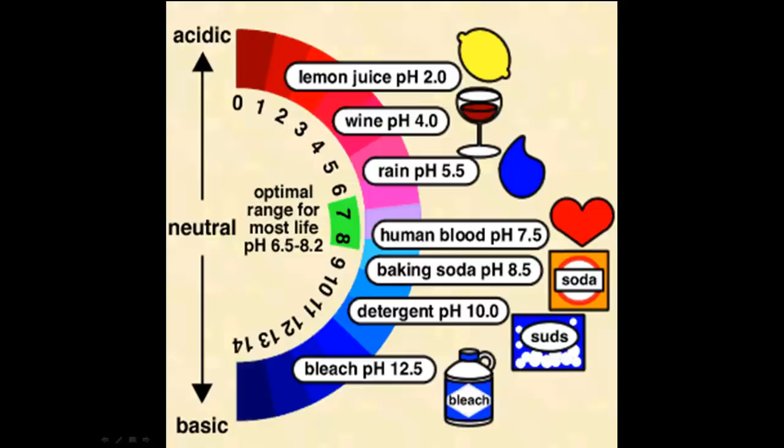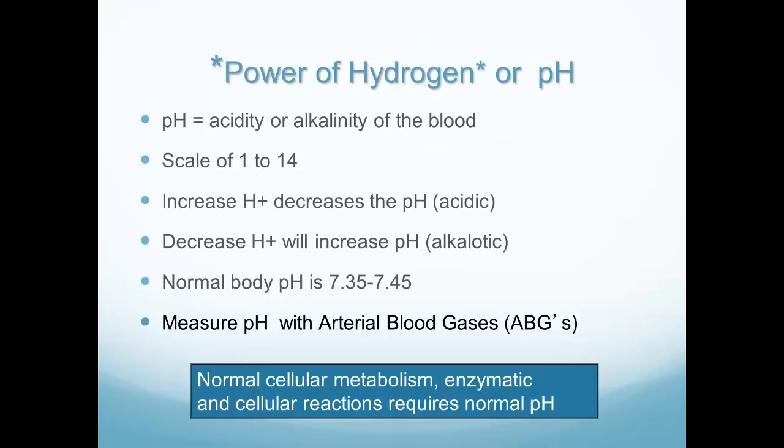That gives you some idea about what pH is and what kinds of things are acidic or alkalotic. In relationship to the patient's body, we won't use the term 'basic' — that's more of a chemistry lab term. Here we'll be talking about acidotic or alkalotic in terms of pH. The pH, or power of hydrogen, gives us a qualification of the acidity or alkalinity of the blood — how acidic or how alkalotic it is.